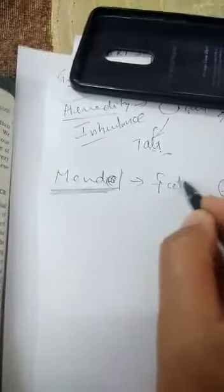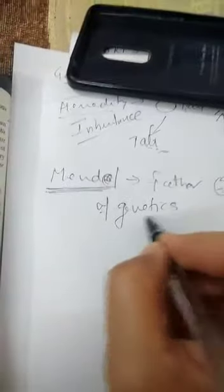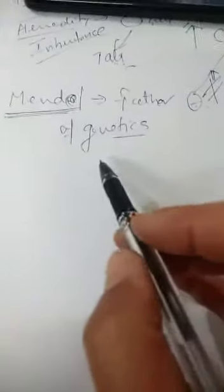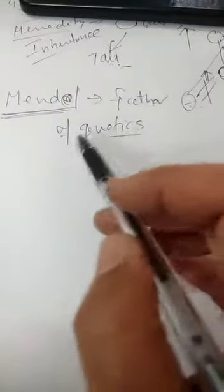So Mendel is known as the father of genetics. Mendel was basically, he was a mathematician and he was a father in a church of Czechoslovakia, but he was very curious to know. He was not a scientist, not a researcher, but he was a mathematician basically. His subject was mathematics only.